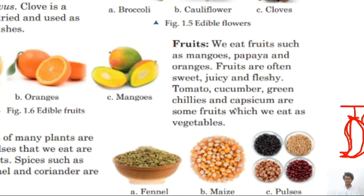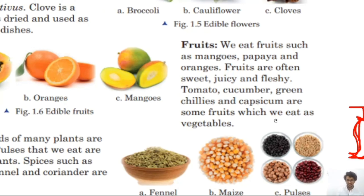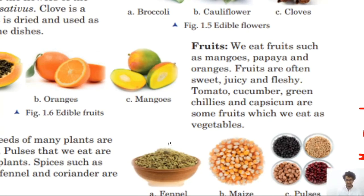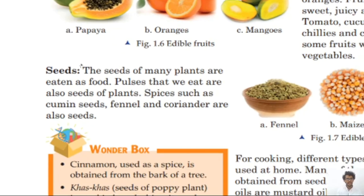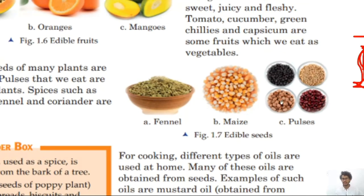Seeds: the seeds of many plants are eaten as food. Pulses that we eat are also seeds of plants. Dal is a seed — we cook the seeds and then eat them. Pulses are various kinds of dals that we eat, like red beans and black beans.